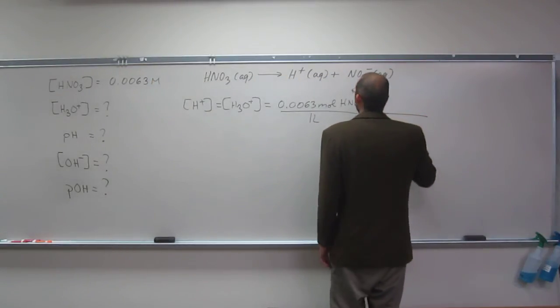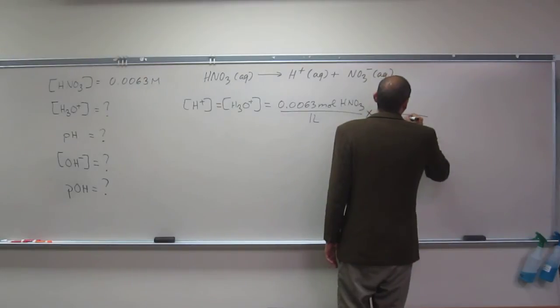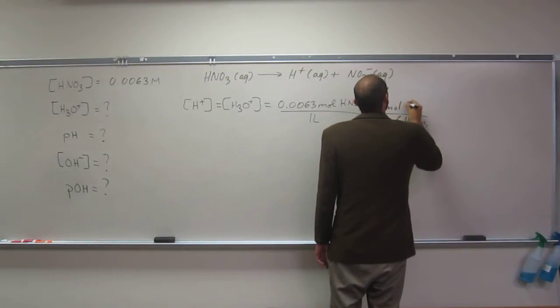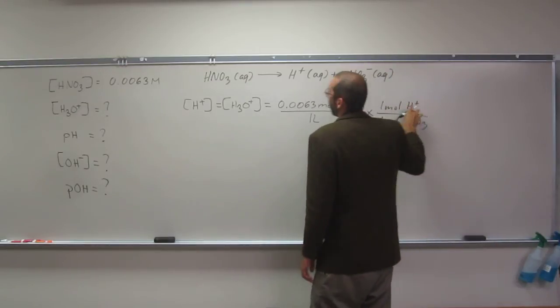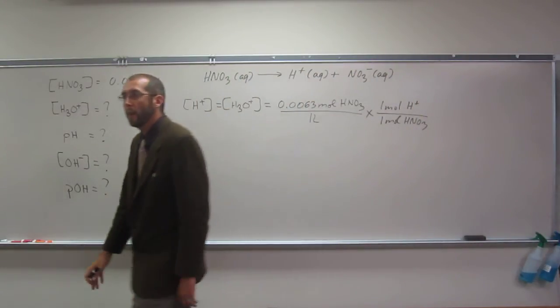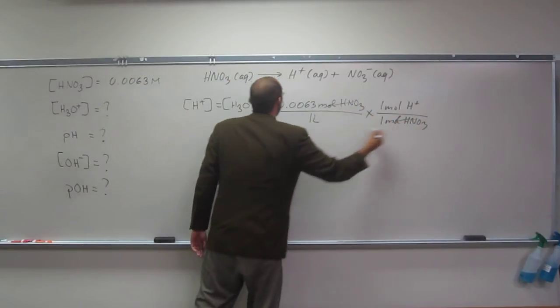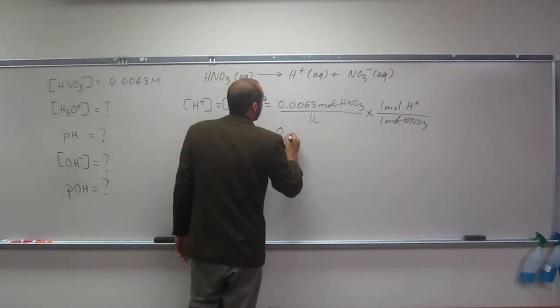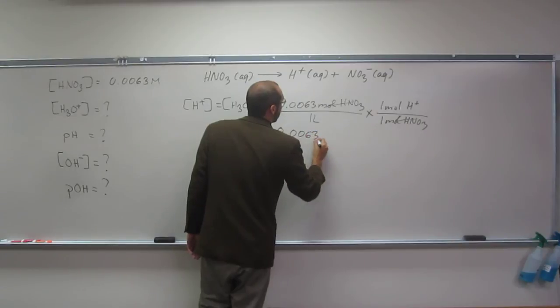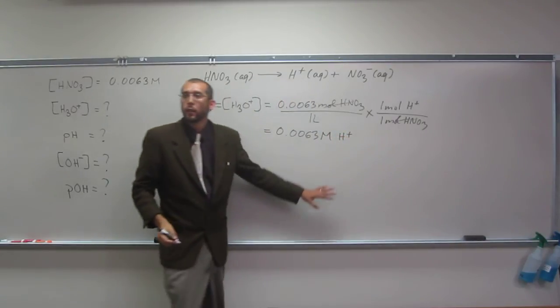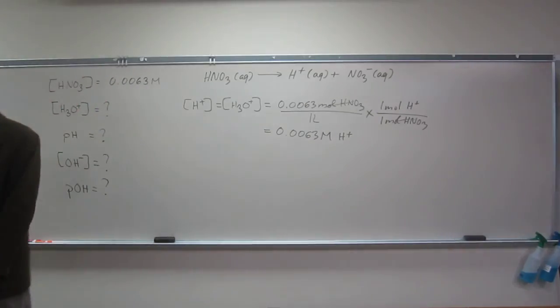So, we've got one mole nitric acid per every one mole H+, and remember H3O+ comes from that. So, what we can do, cancel, cancel, and we should get 0.0063 molar H+. Is everybody okay with doing that? Remember, you get that conversion factor from that chemical equation.